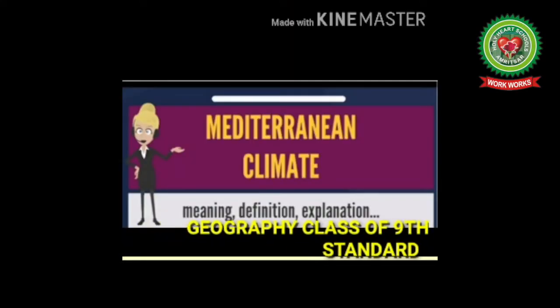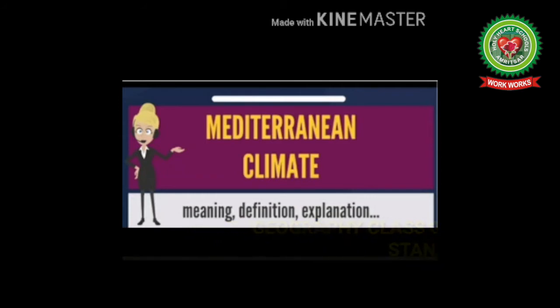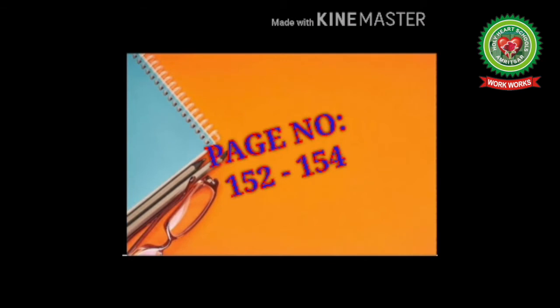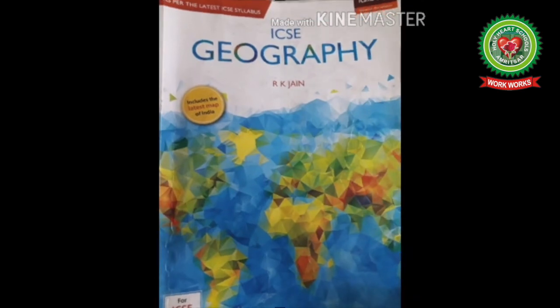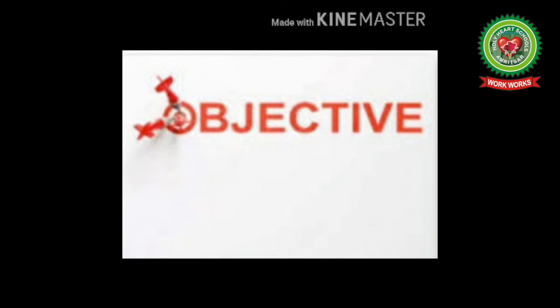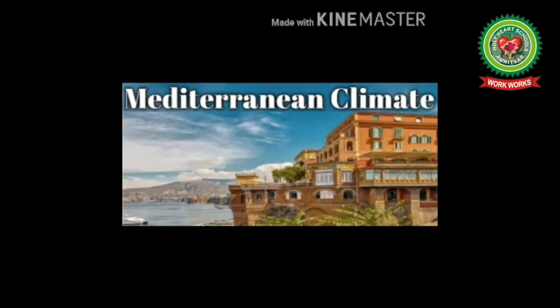Hello students, welcome to Geography class of 9th standard. We are doing Natural Regions of the World, lesson number 18. Today we are going to start with the Mediterranean Region, which is given on pages 152 to 154 of your geography book. The objectives of the day are to discuss the location and area, climatic conditions, natural vegetation, and human adaptation of the Mediterranean Region.